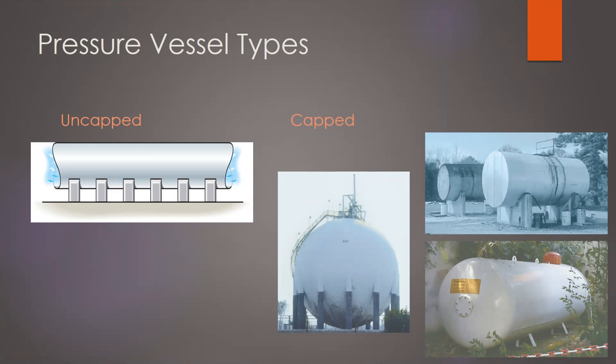We can also have capped pressure vessels — something like a propane tank holding some type of fuel or pressurized gas. In the pictures on the right I have three different types of capped vessels. One is a spherical pressure vessel; the other two are cylindrical. We'll see that the calculations for spherical and cylindrical are related but slightly different.